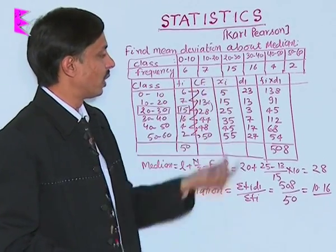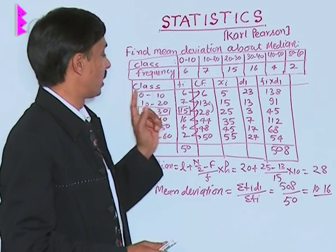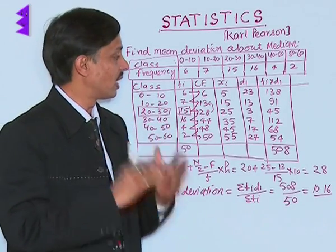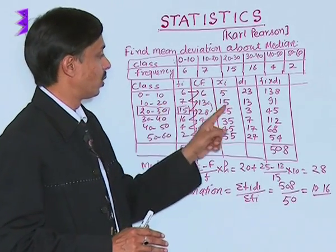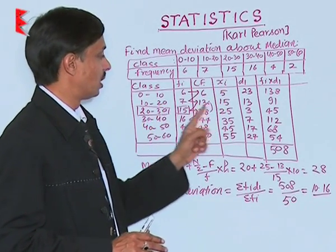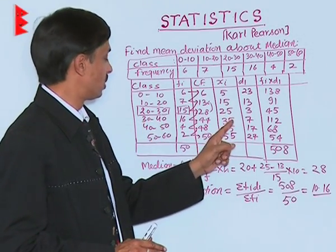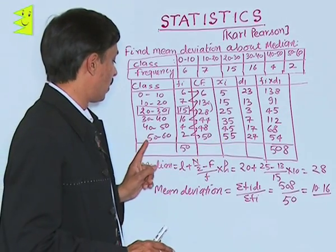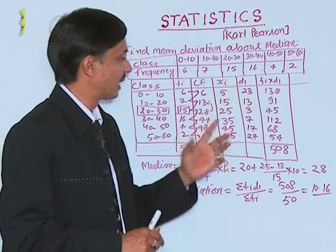Midpoint of the classes is known as the observation xi. First observation is 0 to 10, that is xi class mark 0 plus 10 upon 2 is 5, 10 plus 20 upon 2 is 15, 20 plus 30 upon 2 is 25, 30 plus 40 upon 2 is 35, 40 plus 50 upon 2 is 45, 50 plus 60 upon 2 is 55. These are the xi.